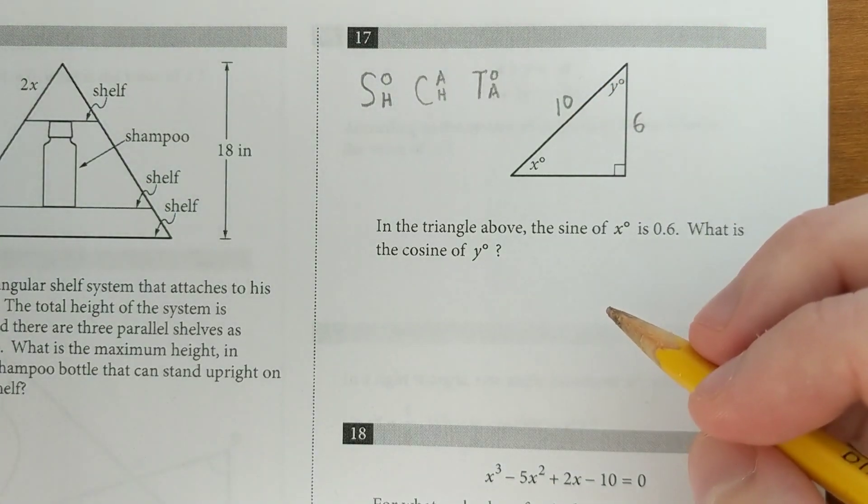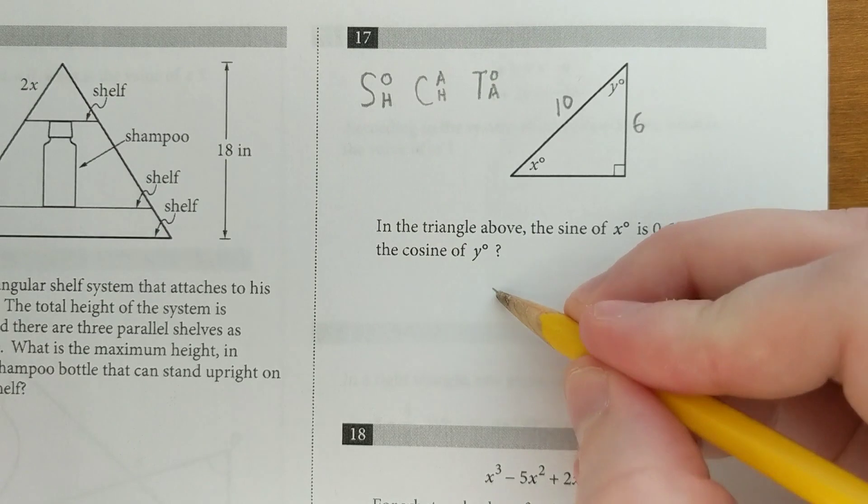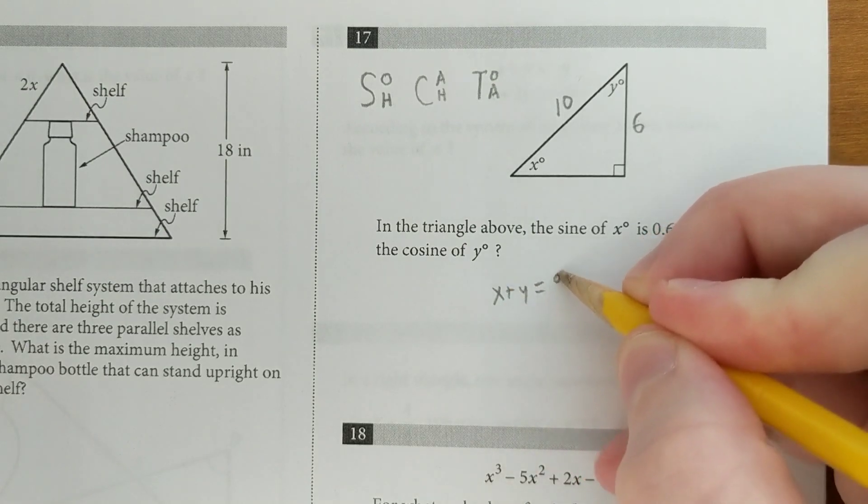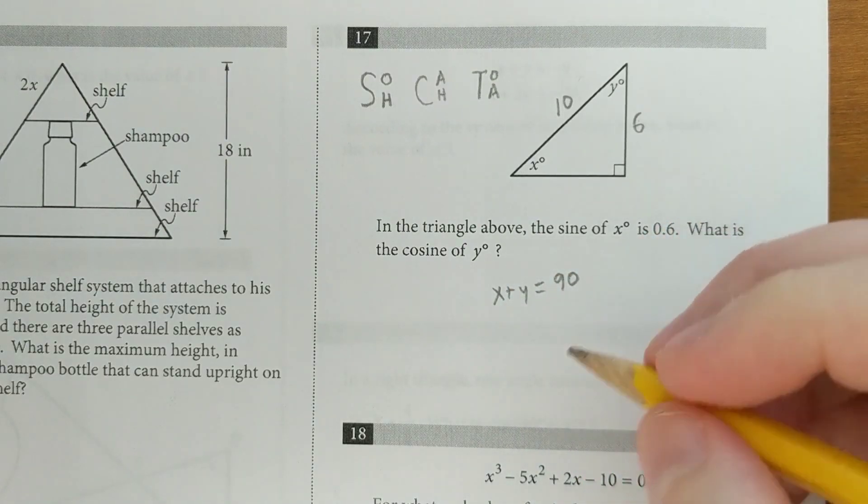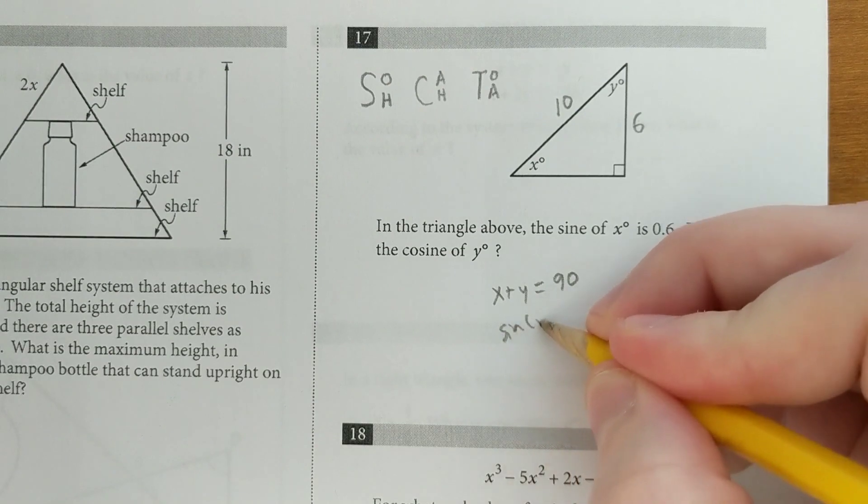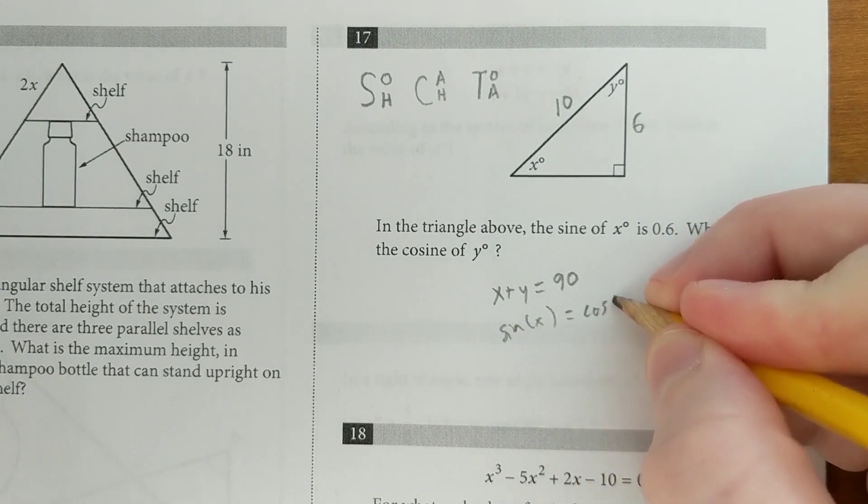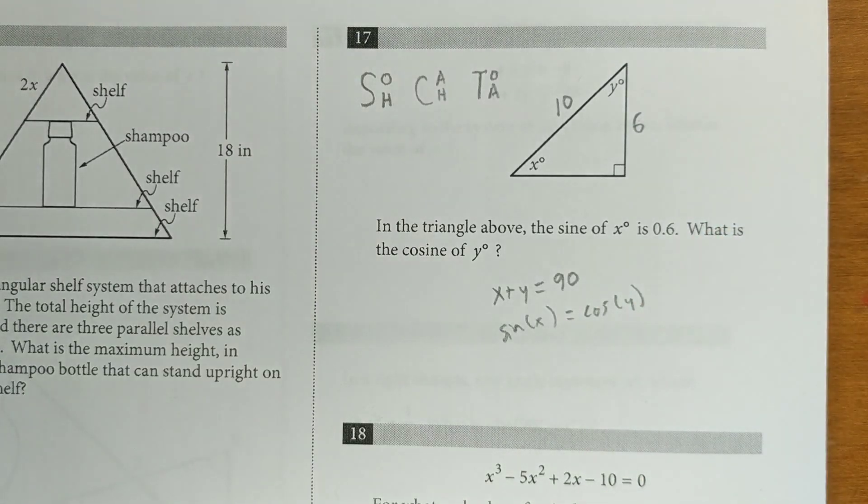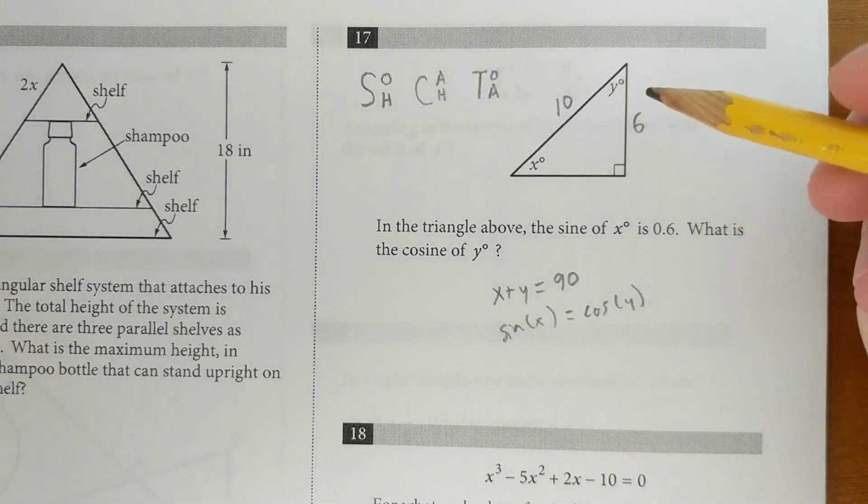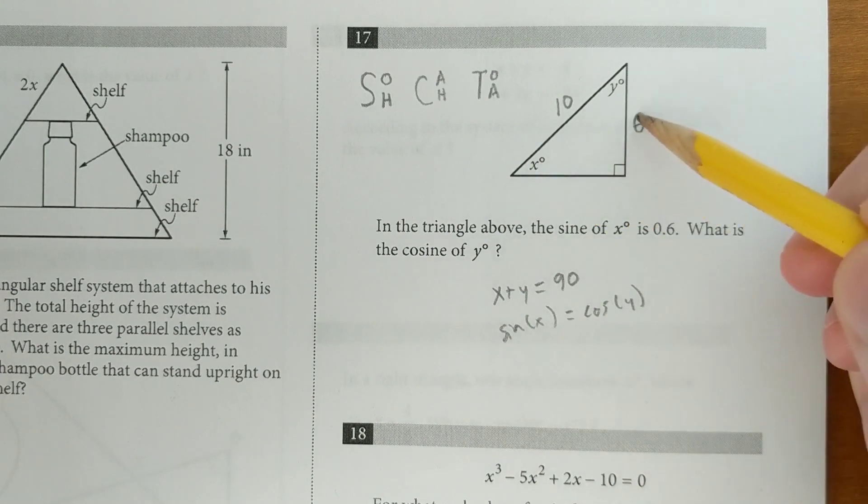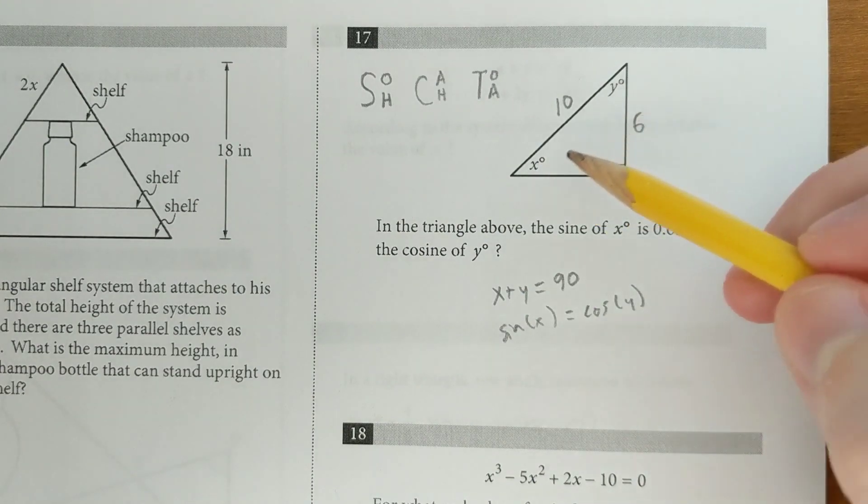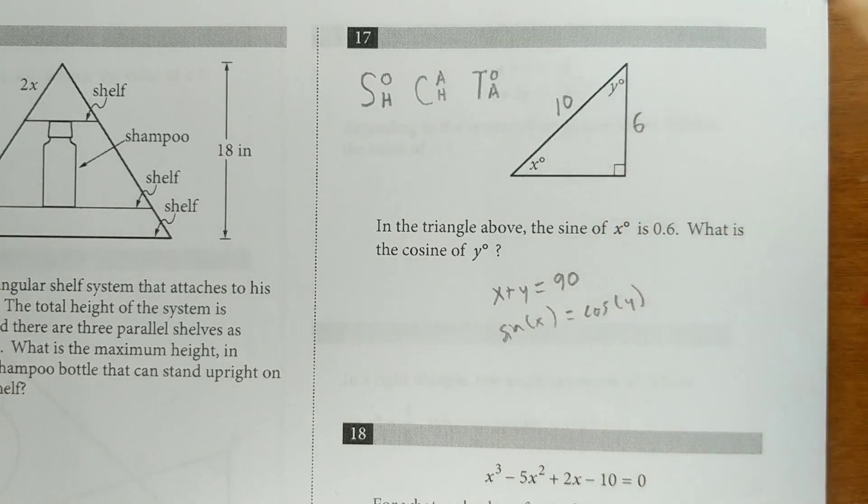Now this brings up an important rule that shows up a lot on the SAT. When x plus y add up to 90, the sine of one of those angles is always going to equal the cosine of the other angle. And hopefully from this example you can see why that would be the case. The opposite of x is the same as the adjacent of y, so the sine of this equals the cosine of that.